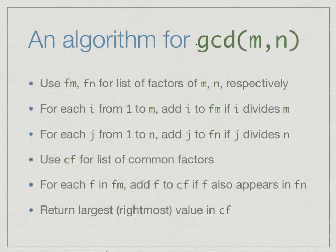So we construct two lists of factors for the inputs M and N: Fm, the factors of M, and Fn, the factors of N. And then from these, we compute Cf, the list of factors in both lists or common factors. Our goal is to return the greatest common divisor, or the largest number in this common list, which happens to be the last one since we add these factors in ascending order.